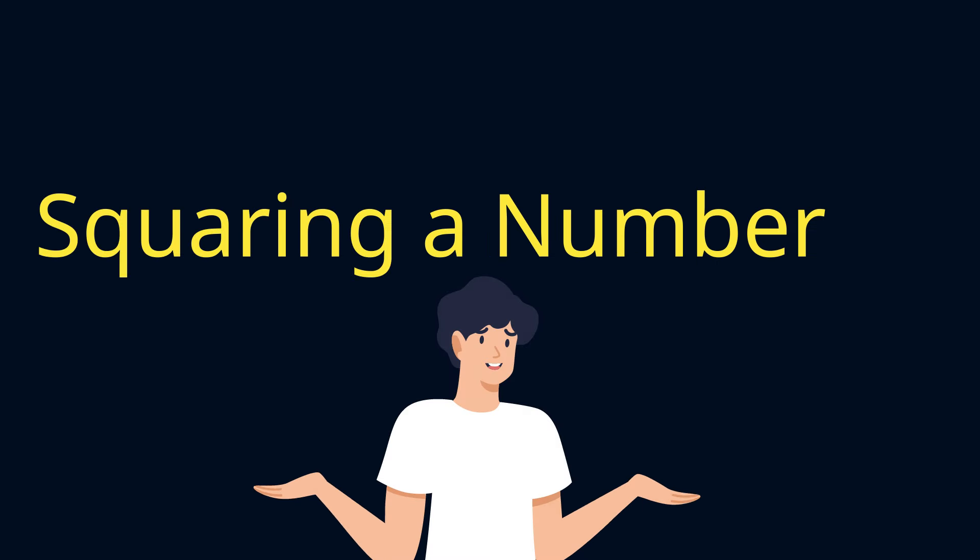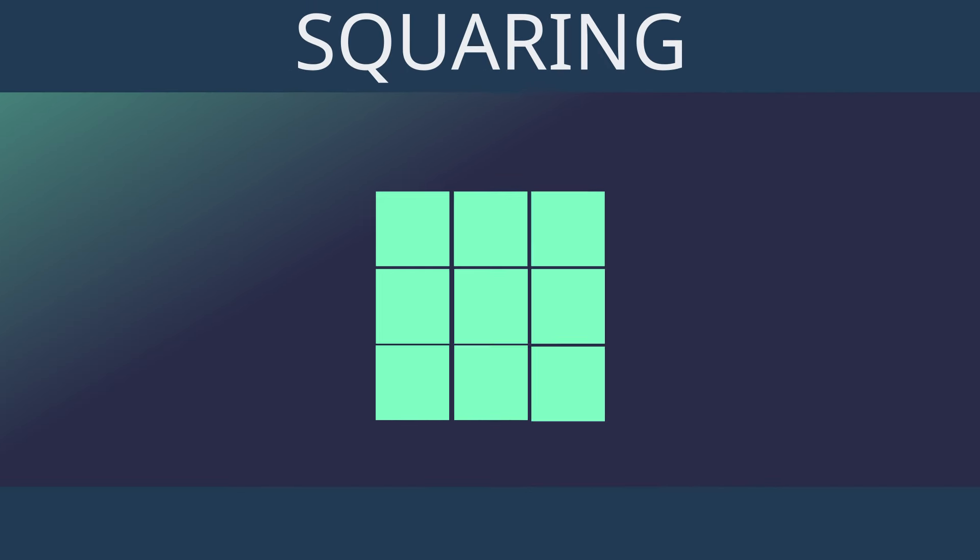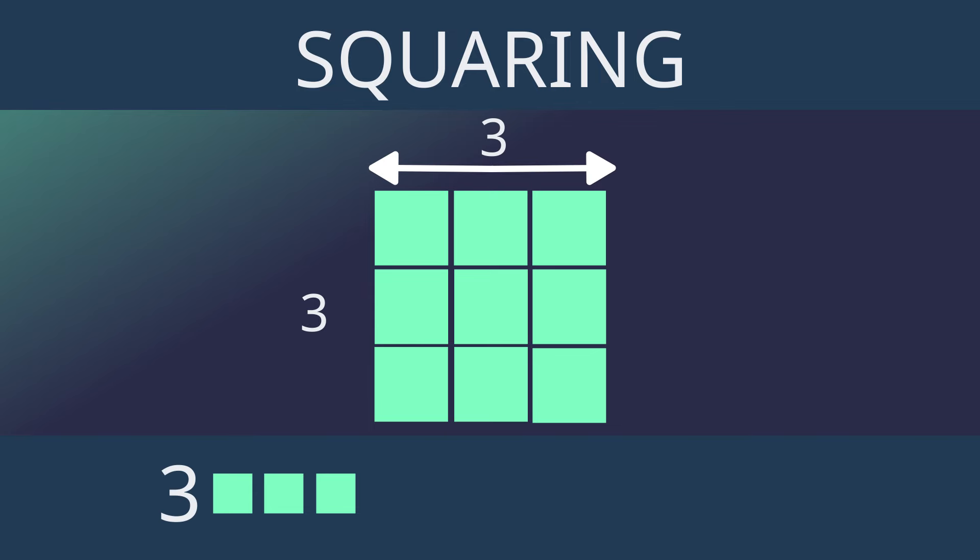What does squaring a number mean? Think of the shape of a square itself. If you want to work out the size, all you have to do is times the side by side, like so.